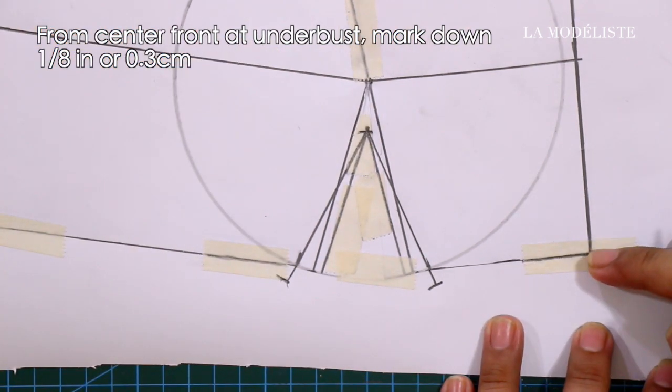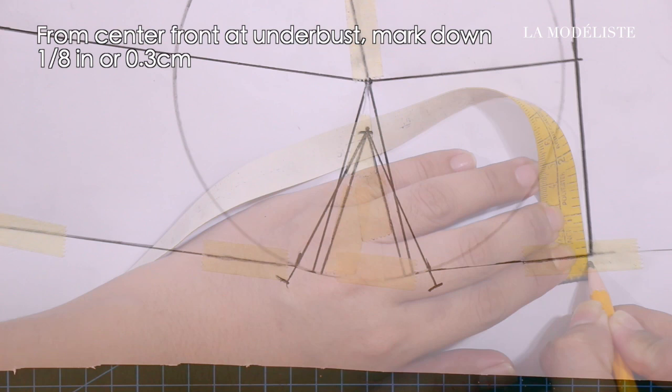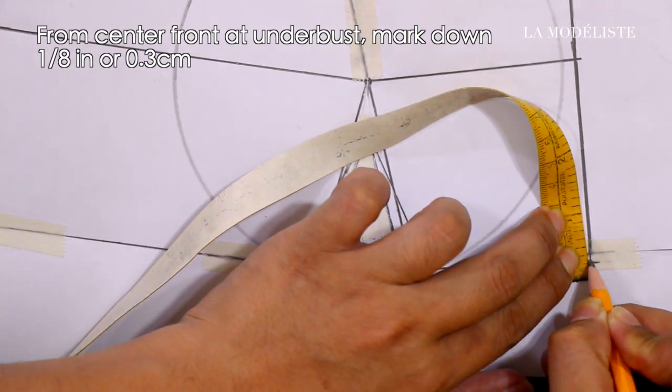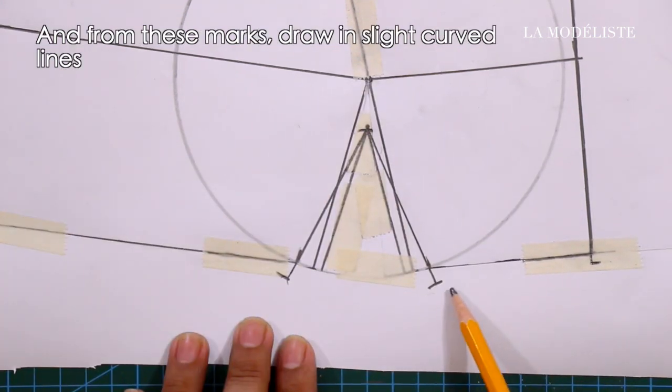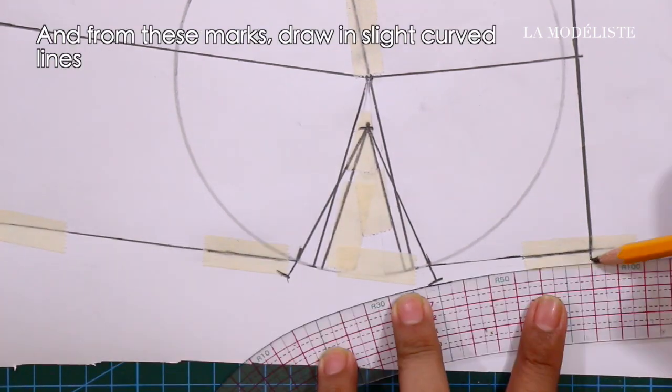Next, from center front at underbust, mark down 1/8 of an inch or 0.3 centimeter. And from these marks, draw in slight curve lines.